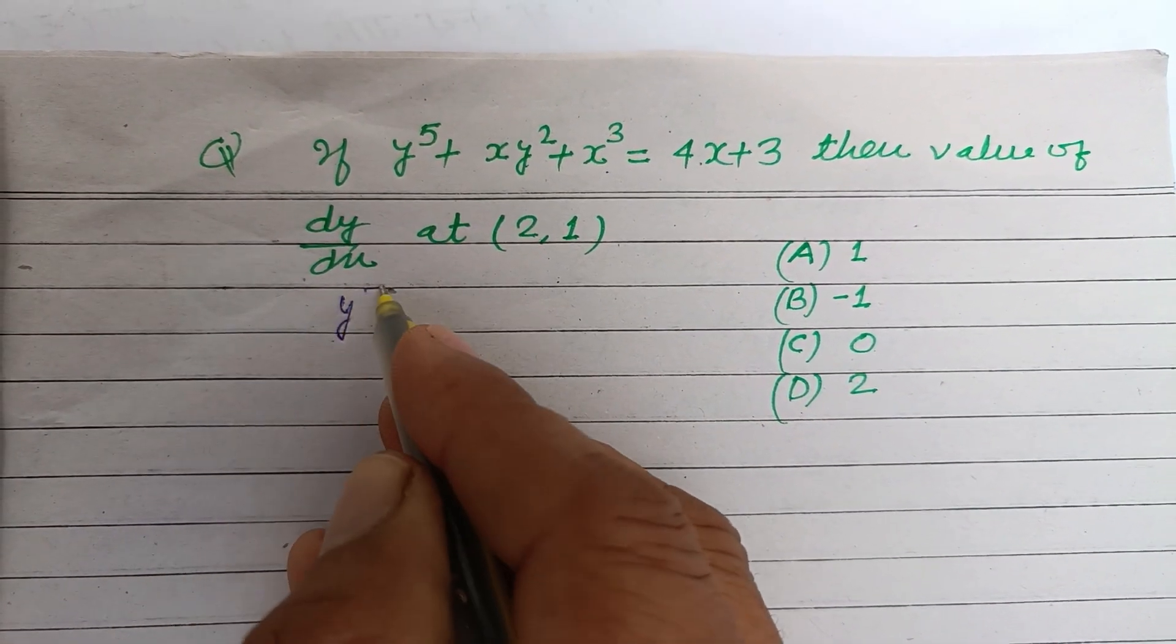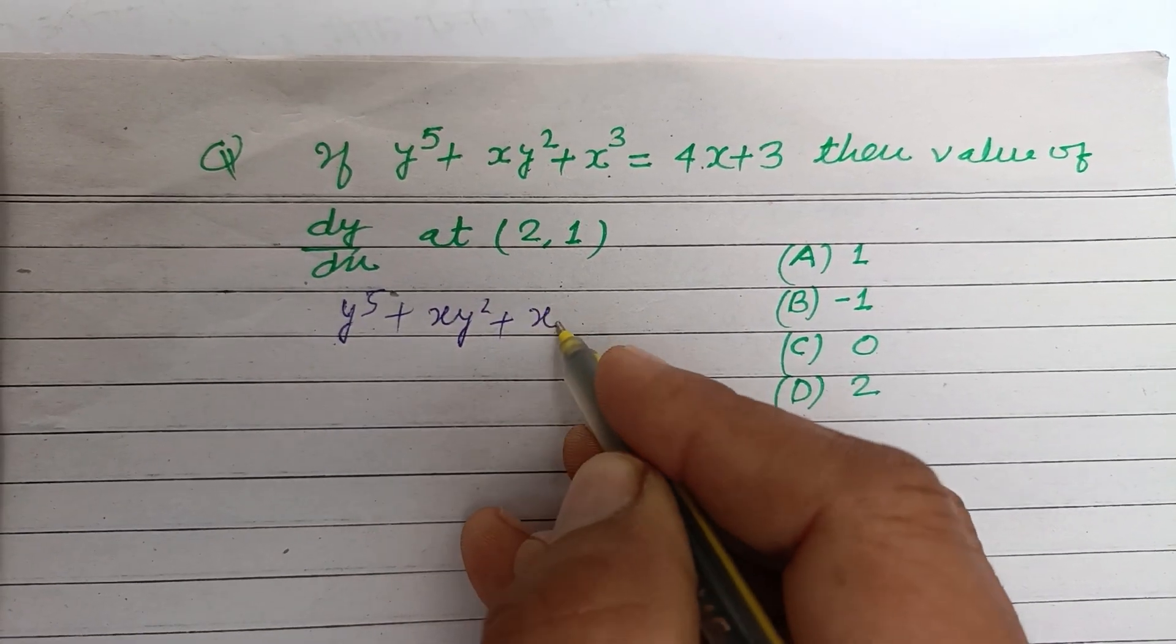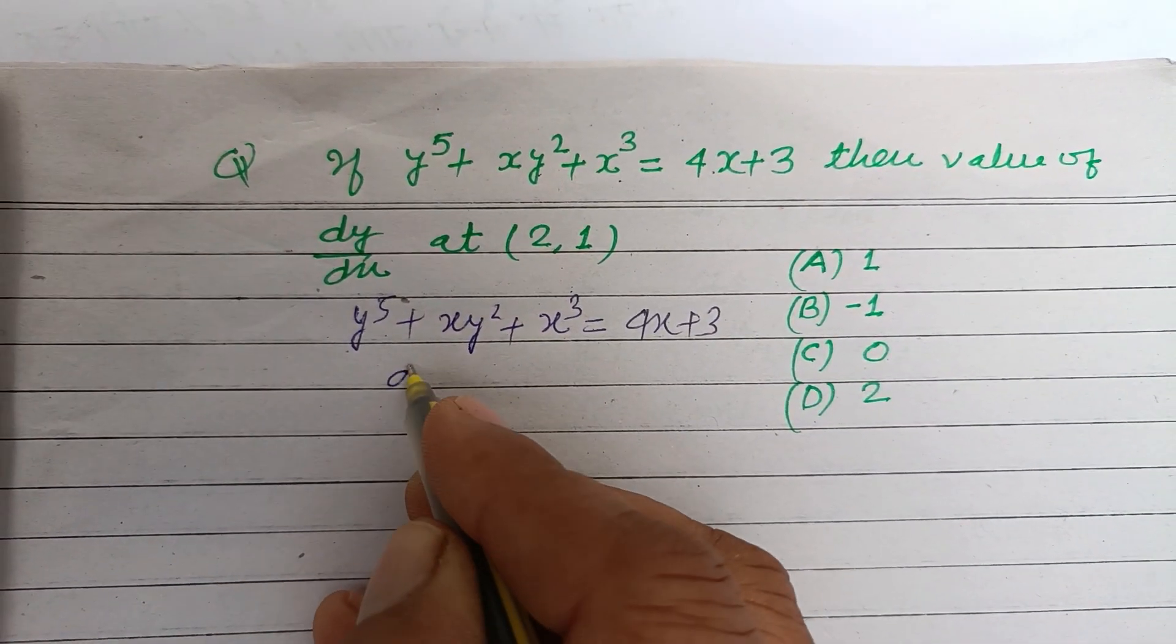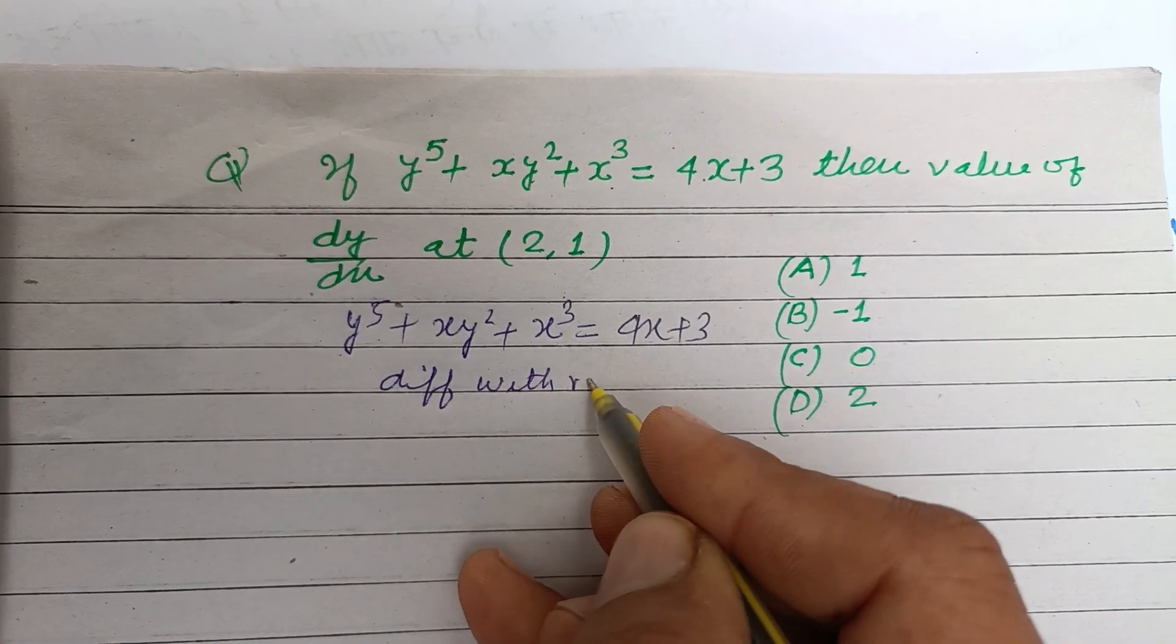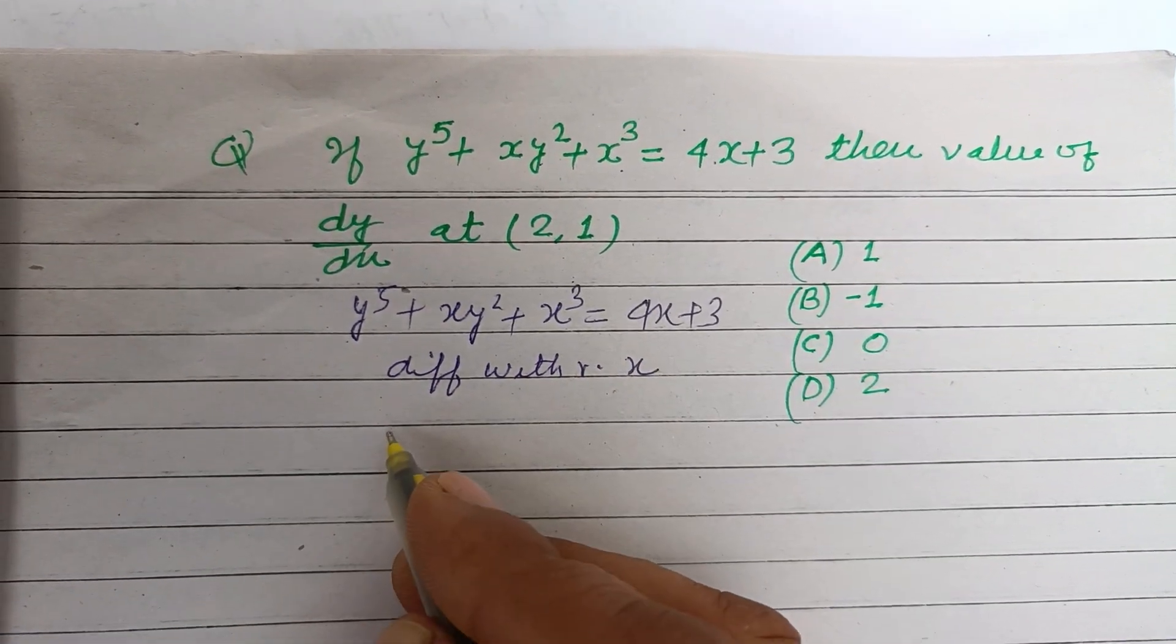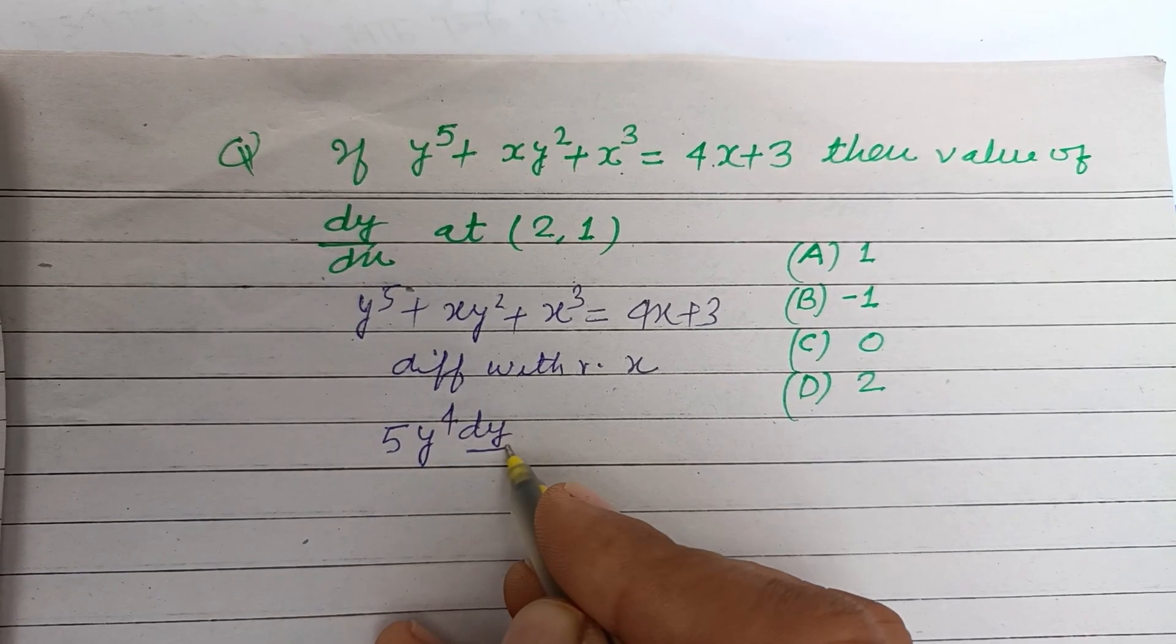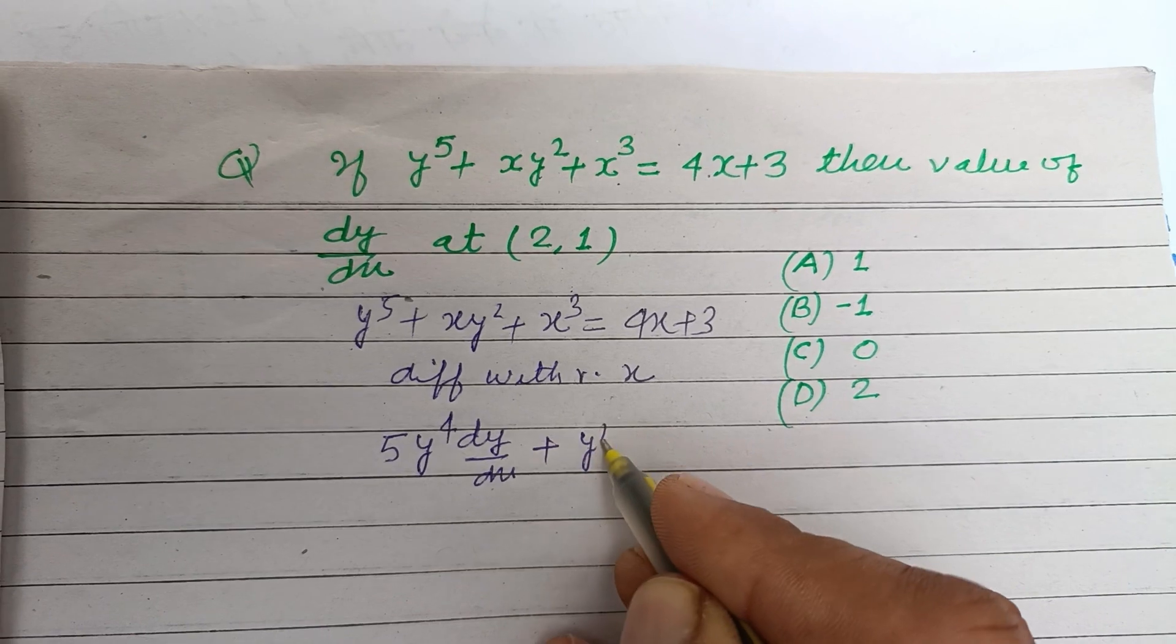So here y to the power 5 plus xy square plus x cubed equals 4x plus 3. Differentiating with respect to x, this is 5y to the power 4 dy by dx plus... for xy square...